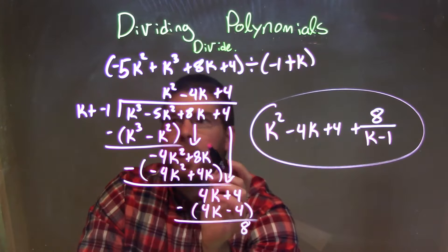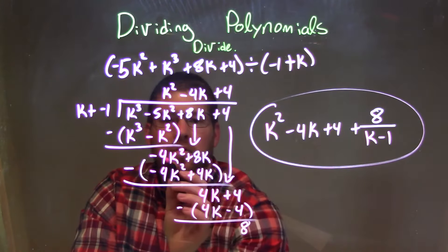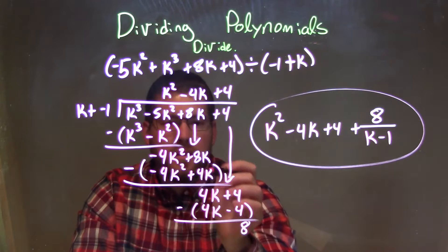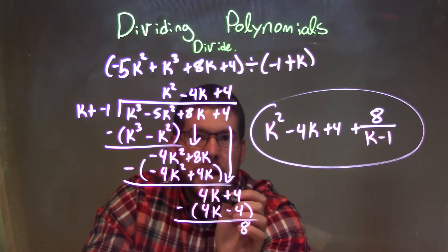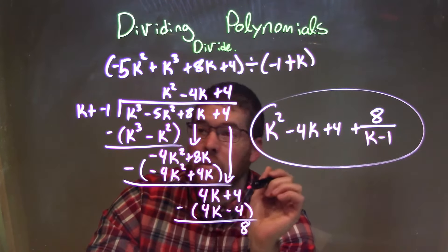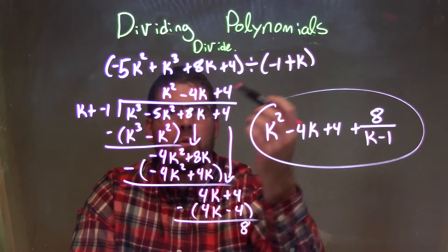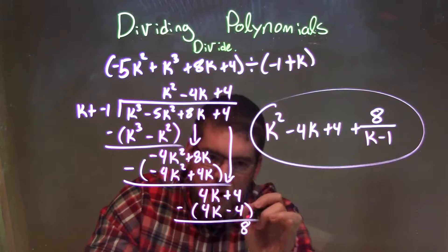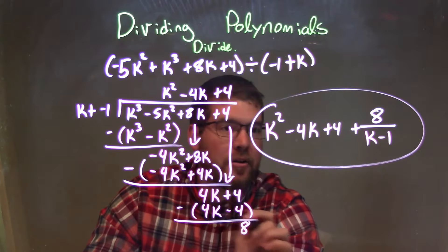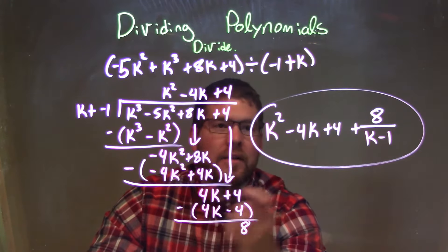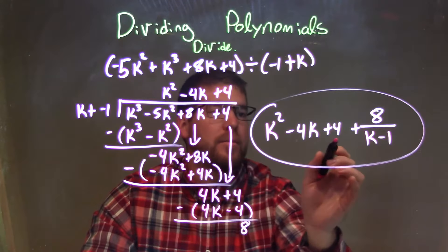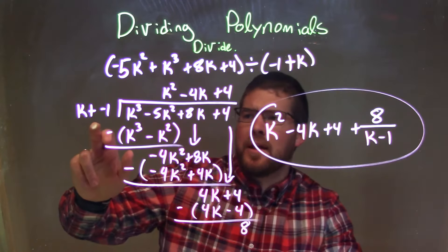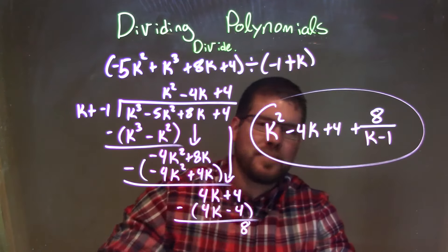I brought down the 8k. Same thing — what times k is minus 4k squared? That's minus 4k. Multiplied minus 4k to both parts, subtracted, and got a positive 4k. Brought down the 4. What times k gives me 4k? That's just positive 4. Multiplied positive 4 to both parts, got 4k minus 4, subtracted them, and got a positive 8 — that is my remainder. So my final answer is k squared minus 4k plus 4, plus remainder 8 divided by k minus 1.